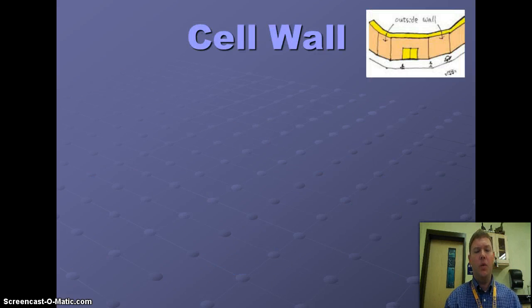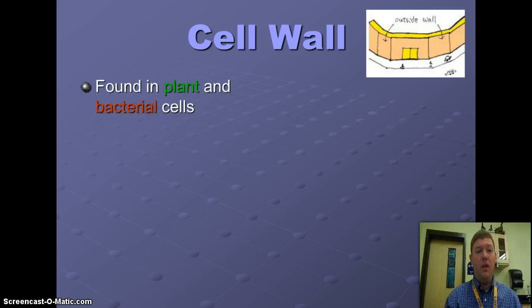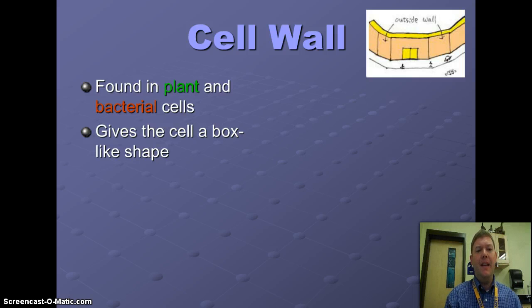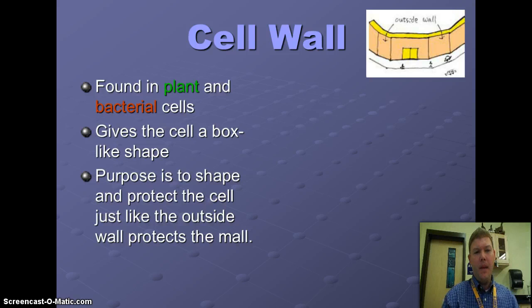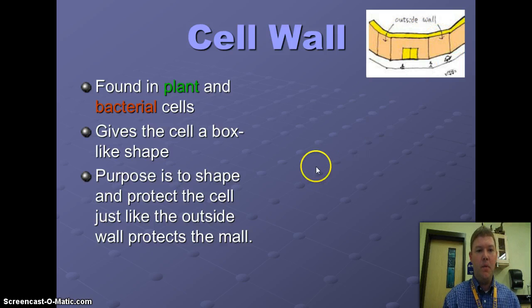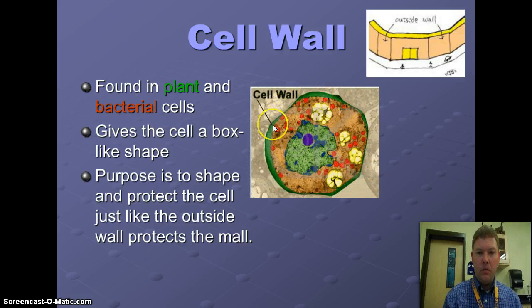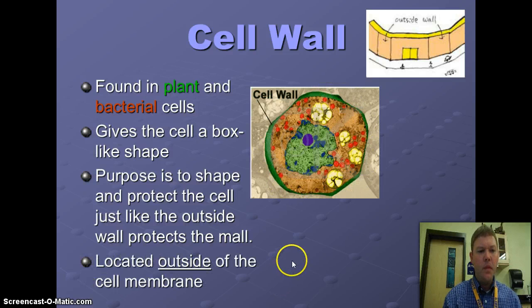Let's first talk about the cell wall. What is the purpose of a cell wall? We're going to find it in plant and bacteria cells and it gives a cell its box-like shape. Its main purpose is to shape and protect that cell, just like the outside wall of a mall protects the contents inside. That wall is a barrier located outside of the cell membrane.